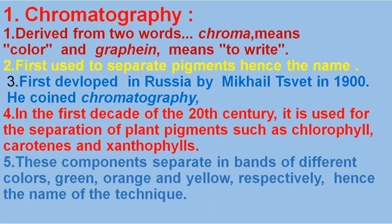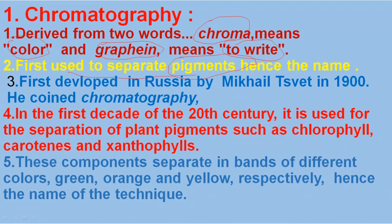Let's start with the main topic - chromatography. The word chromatography is derived from two words: 'chroma' meaning color, and 'graphene' meaning to write. This technique was first used to separate pigments, which are colored or coloring compounds. That is why the name of this technique is chromatography - meaning to write the color.